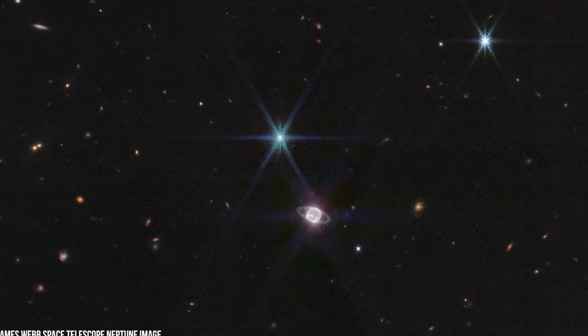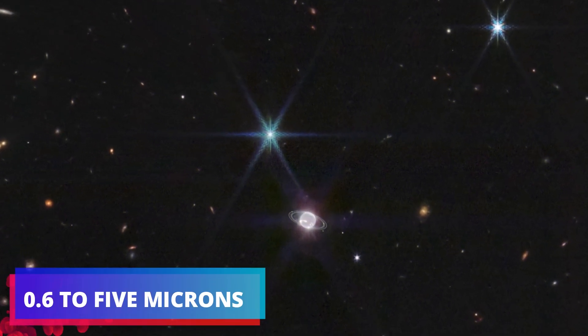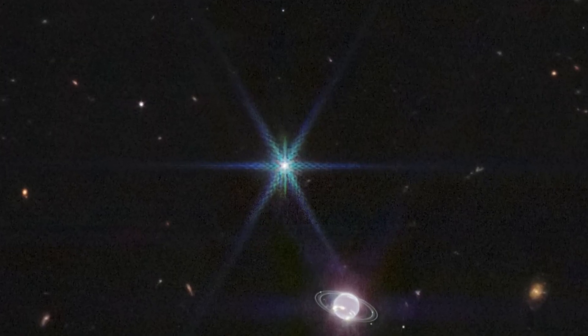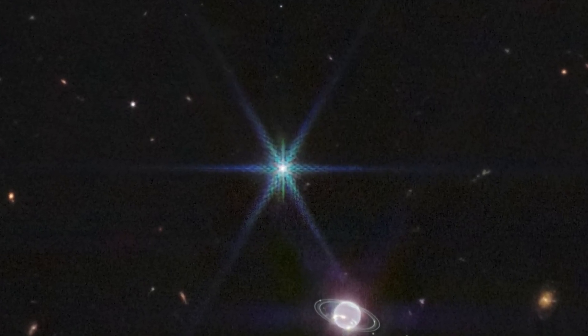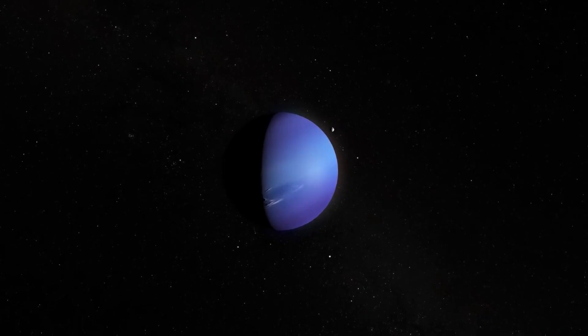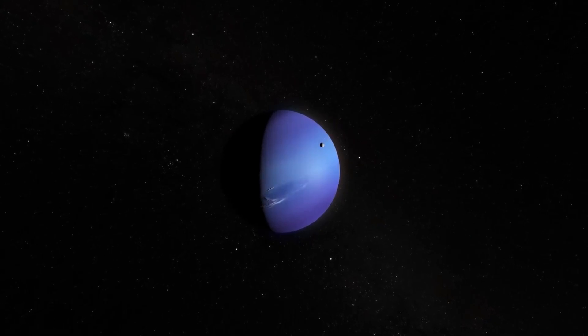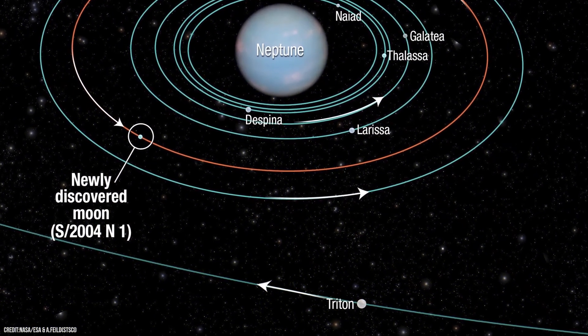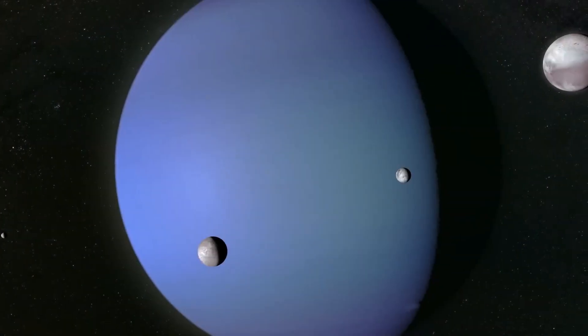Webb captured Neptune at wavelengths ranging from 0.6 to 5 microns. In the image shot by Webb, the planet doesn't appear blue because its methane-rich composition absorbs infrared wavelengths, which makes the planetary body appear dark overall. However, high-altitude methane ice clouds appear lighter and brighter because they reflect sunlight.